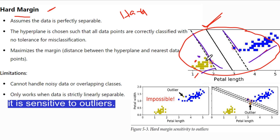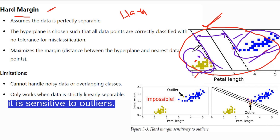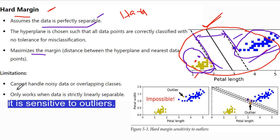Hard margin works only for linearly separable data. That means when you find the margin, one side must have one class only and the other side must have the other class only — it does not accept mixed class points on either side. What we conclude is: it assumes data is perfectly separable. It maximizes the margin. The limitations are: it cannot handle noise data or overlapping classes, it only works when data is strictly linearly separable, and it is sensitive to outliers.